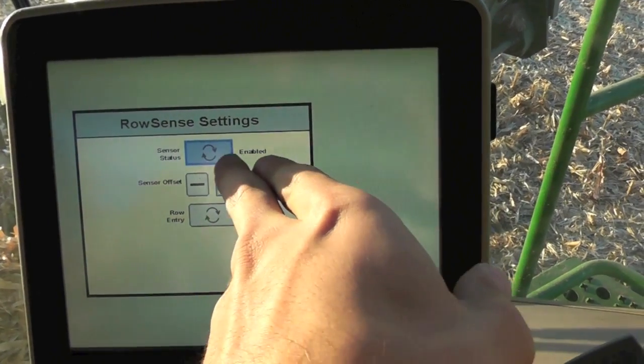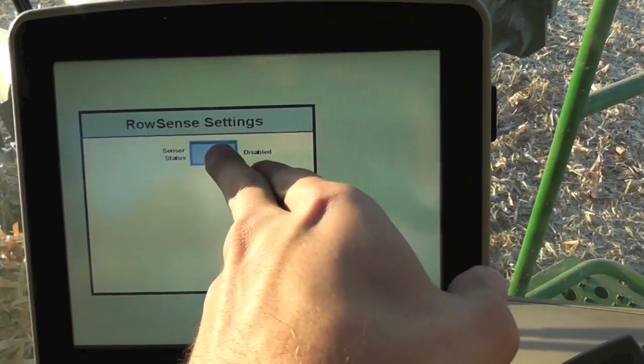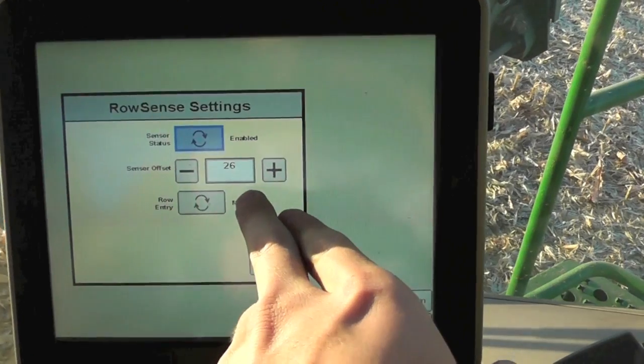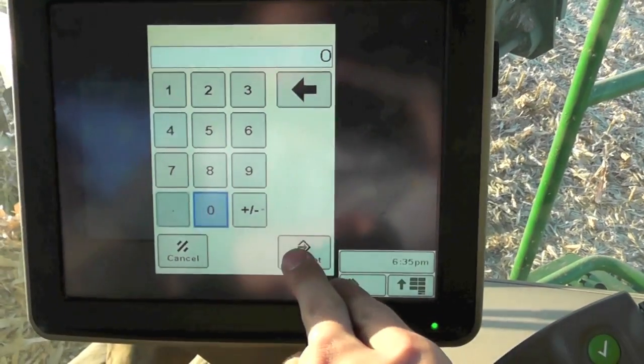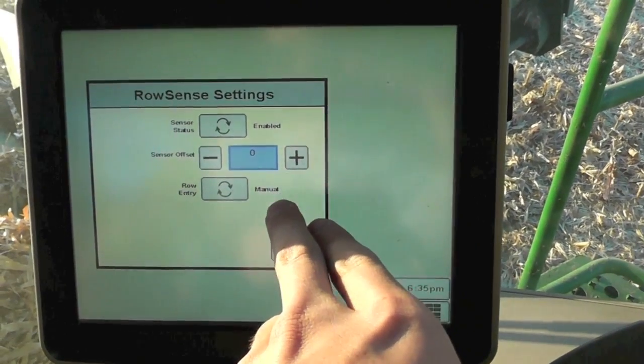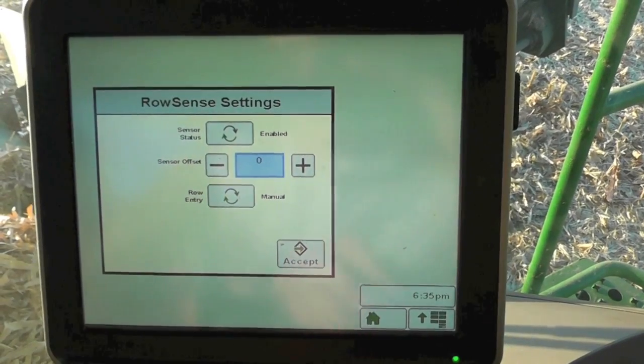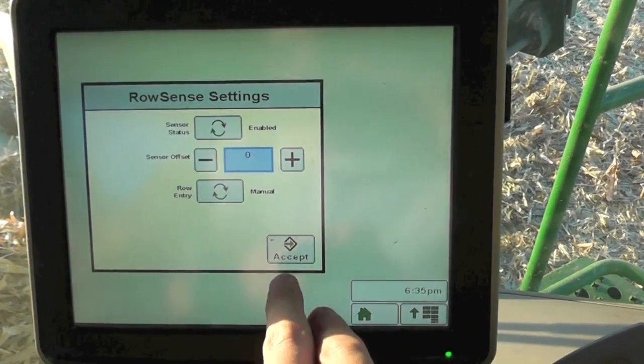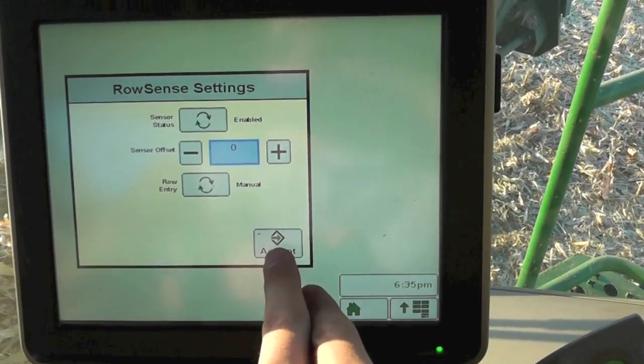Make sure this is enabled. If it's disabled, turn it to enabled. Your typical offset will be set at zero. If you need to adjust it to the left, move it negative. If you need to go positive, move it to the right. Hit accept.